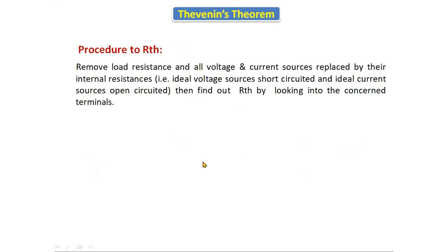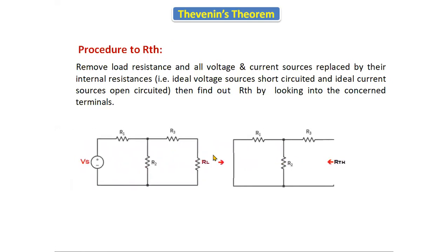Now we will see the procedure to find RTH. For the given circuit, we will open circuit the load resistance and replace the voltage source by a short circuit. If any current source is present, we will open circuit it, and then we find the total resistance across the terminal.